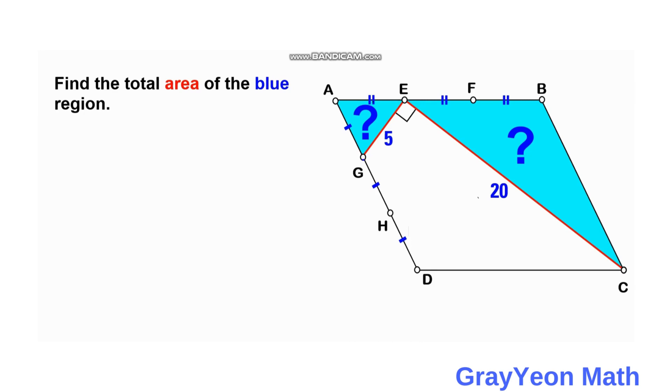So first thing that we can do is we can actually label the equal parts as b. So b and b. And we can actually draw a line from this point A downwards.